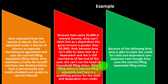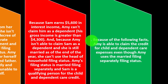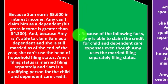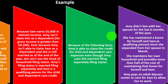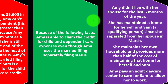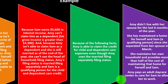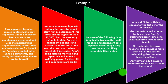Amy's filing status is married filing separately, and Sam is a qualifying person for the child and dependent care credit. Because of the following facts, Amy is able to claim the credit even using married filing separately: she didn't live with her spouse for the last six months of the year, she maintained a home for herself and Sam — a qualifying person — since separating in March, and she provides more than half the cost of maintaining that home. Amy pays an adult daycare center to care for Sam so she can work.